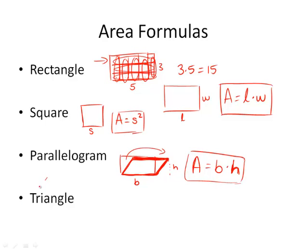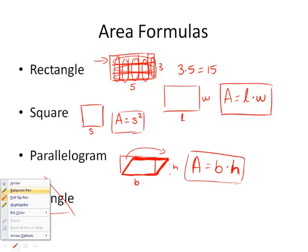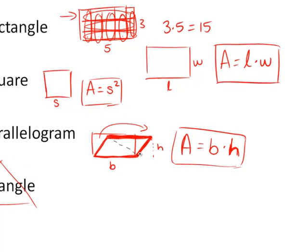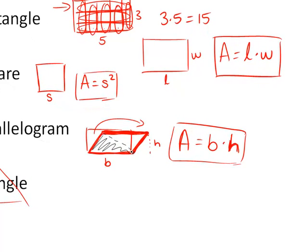Now a triangle can be created from a rectangle or from a parallelogram at any time. All you have to do, let's do this in a different color, is say you had the parallelogram, slice it in half, you got a triangle. That's it. You have a rectangle here, slice it in half, you have a triangle.